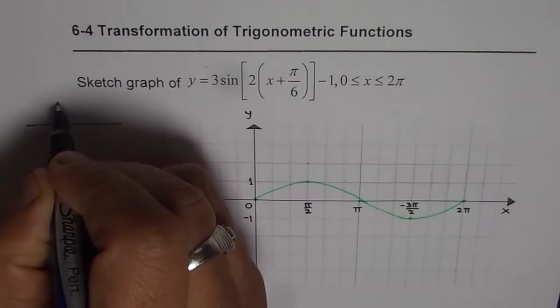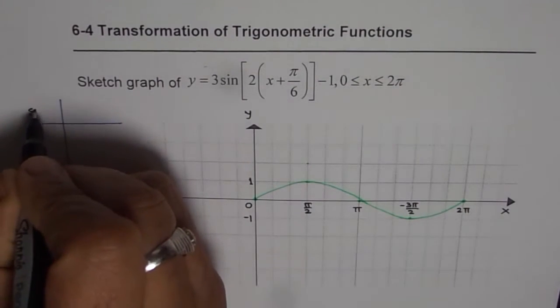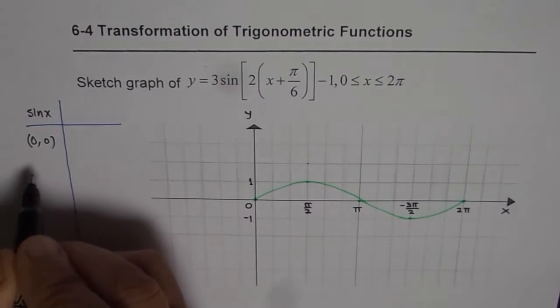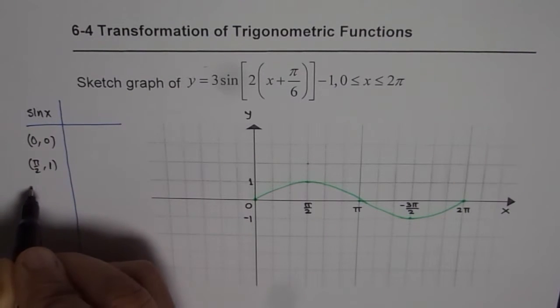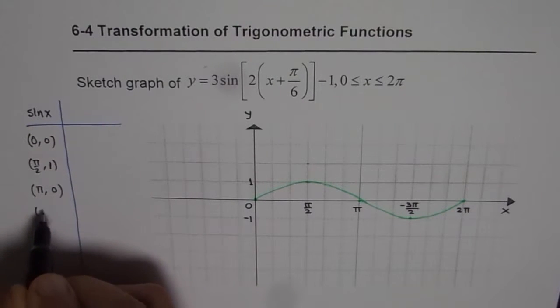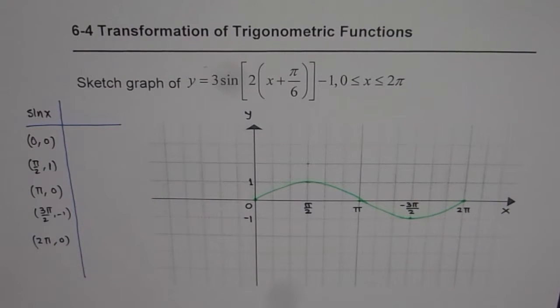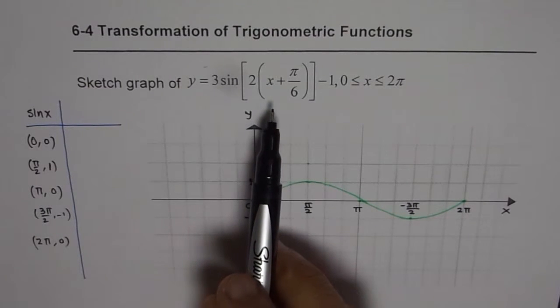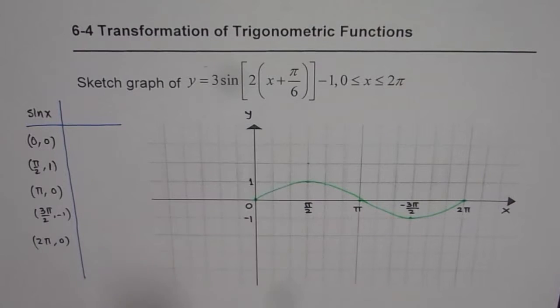That is one wave of sin x which has maximum at pi by 2, minimum value of minus 1 at 3 pi by 2, and zeros at 0, pi, and 2 pi. That gives us the key values of sin function to work with. Here I will make a table giving key values for sin of x. Key values for sin of x are: (0, 0), (pi by 2, 1), (pi, 0), (3 pi by 2, -1), and (2 pi, 0). These are 5 critical points on the function sin of x. If we consider these 5, we can sketch a fairly accurate graph for the given function which is 3 sin 2 times x plus pi by 6 minus 1.